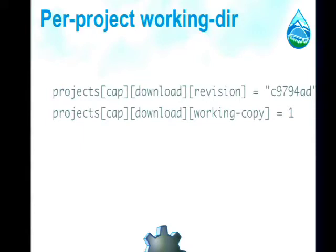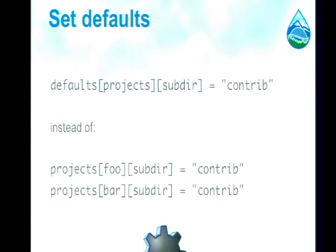Drush Make has long had the ability to specify a working copy — if you have Git repos and you're actively working on modules, it pulls down the Git repository itself so you can make patches. In Drush 6, you can now specify in the make file that you want specific projects to be working copies and others not. Also, you can now set 'project defaults' in one line at the top of your file, which basically cuts the size of make files in half.